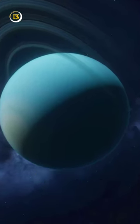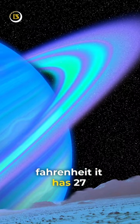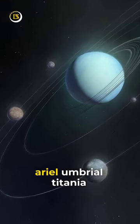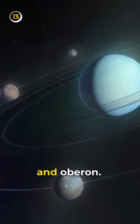Uranus has a very cold atmosphere, with temperatures that can drop down to minus 371 degrees Fahrenheit. It has 27 known moons. The five largest moons are Miranda, Ariel, Umbriel, Titania, and Oberon.